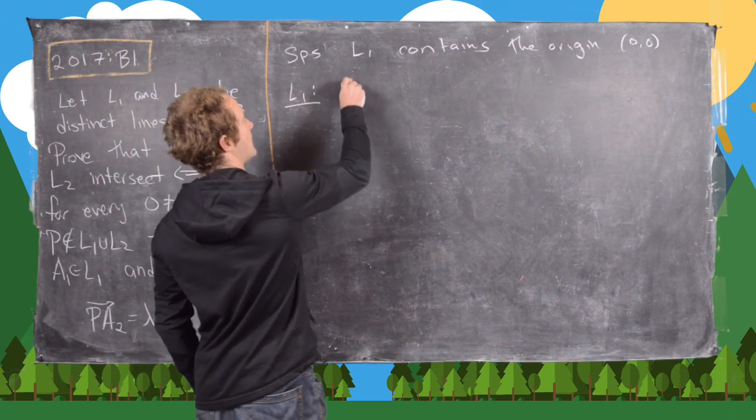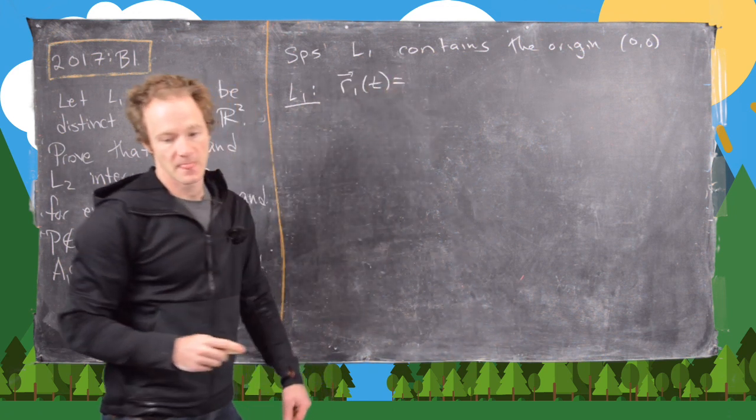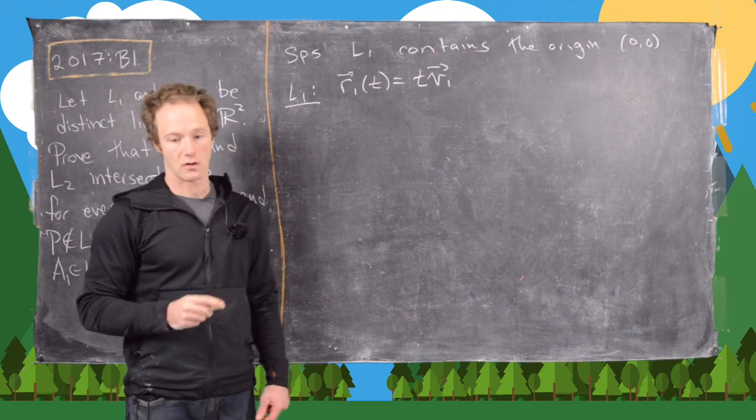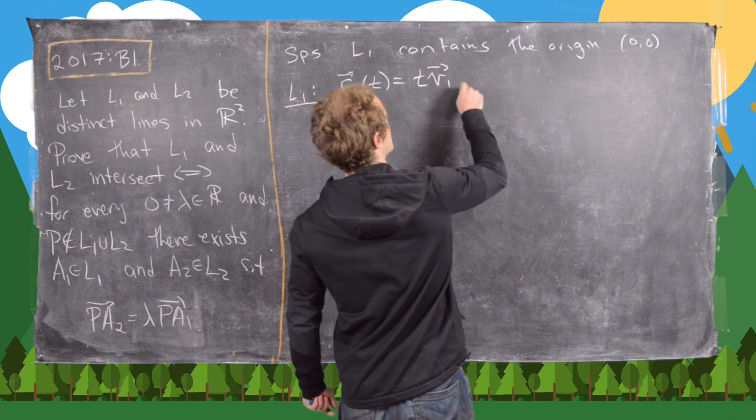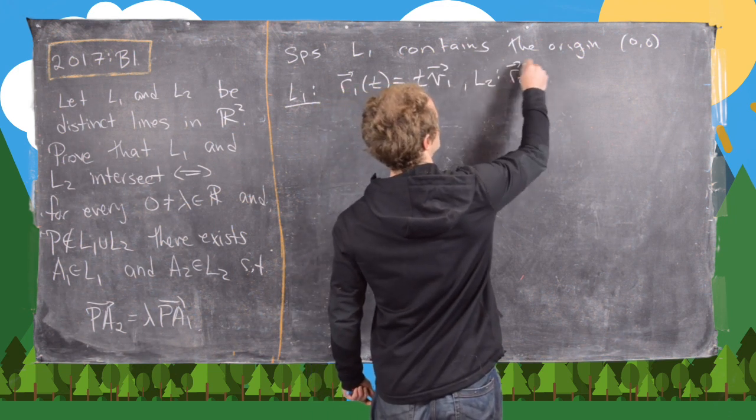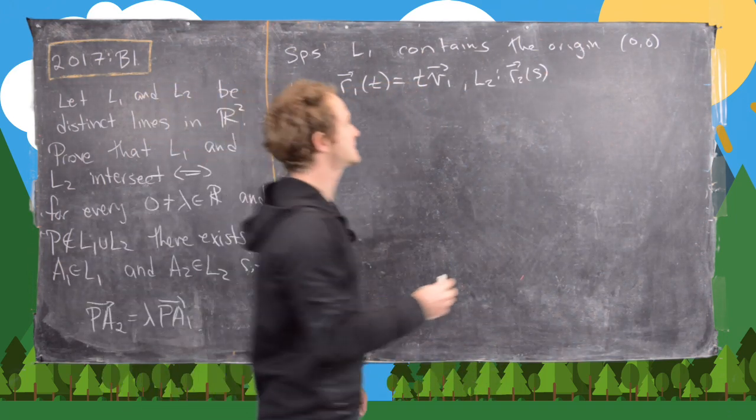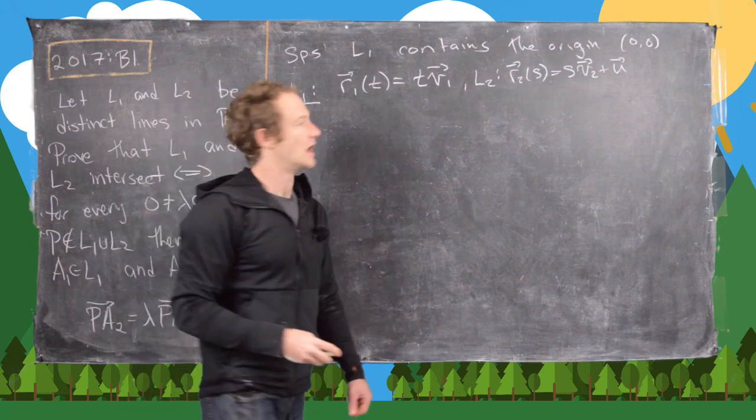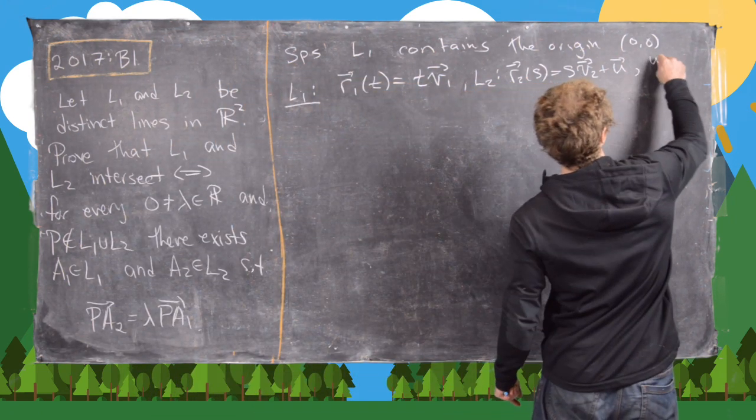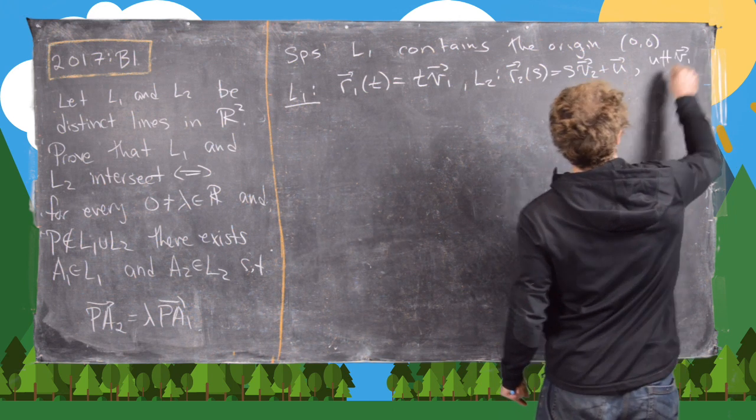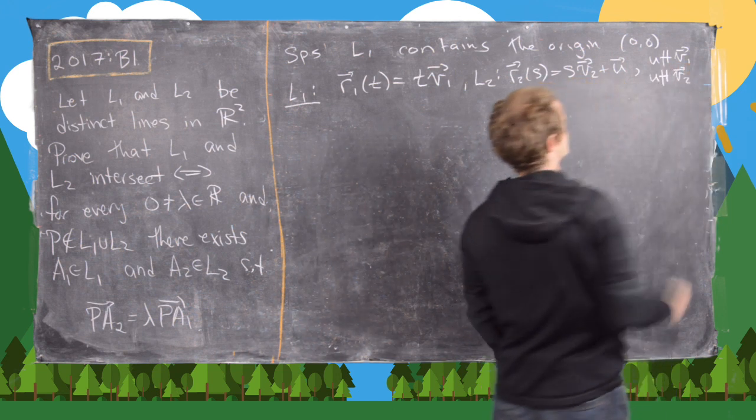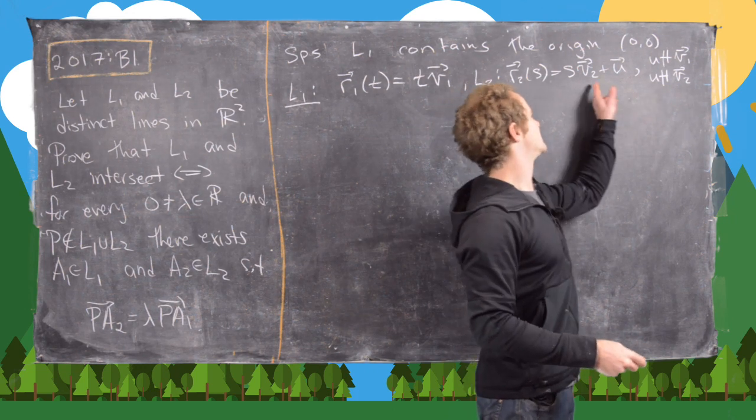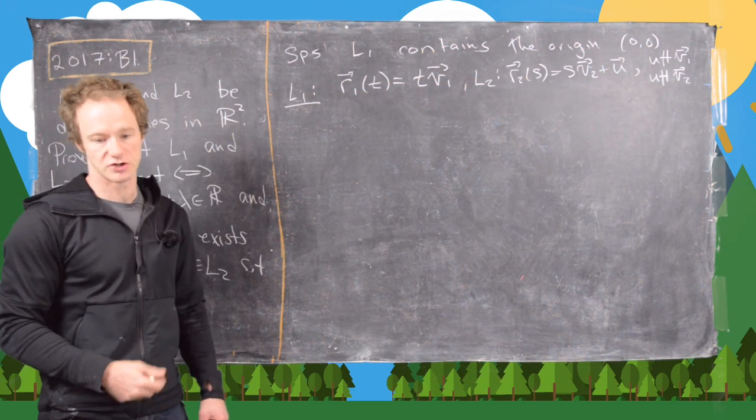We can pick a coordinate system so that that is true. Now we'll parametrize L1 and L2. We'll parametrize L1 by R1 of t equals t times the vector v1, so v1 is pointing in the direction of L1. Next, L2 can be parametrized by R2 of s equals s times v2 plus some vector u. We'll assume that u is not parallel to v1 and u is not parallel to v2. In other words, if these guys intersect, they're not intersecting at the origin.